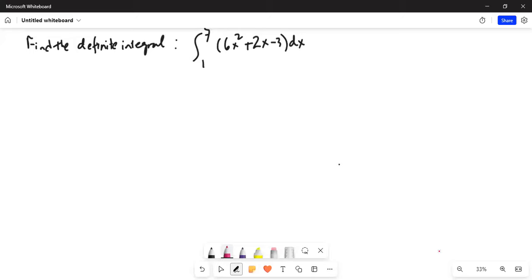Let's find the definite integral of 6x square plus 2x minus 3 with respect to x, and the limits are from 1 to 7. So, I'll start here. Solution: we are going to integrate from 1 to 7 limits, 6x square plus 2x minus 3 dx.